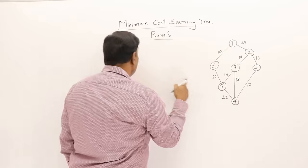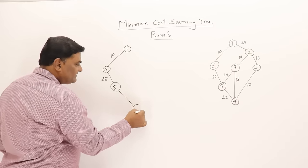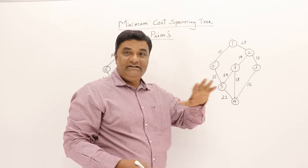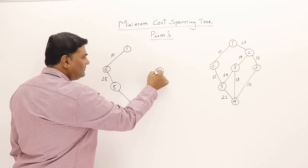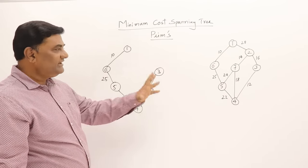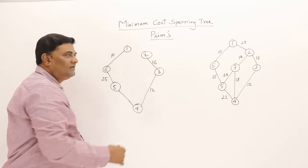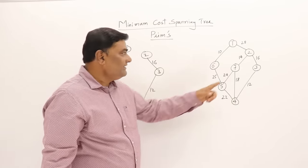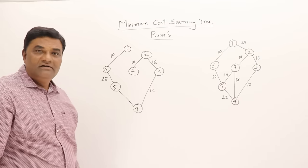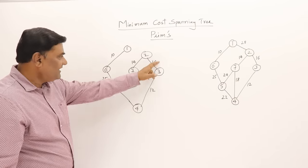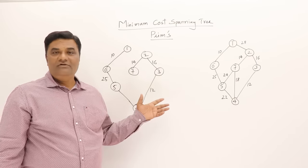From the connected vertices 1 and 6, the connected edges are 25 and 28 — so 25 is minimum, select it. Then checking from vertices 1, 6, and 5: the connected edges include 28, 22, and 24 — the smallest is 22, so vertex 4 is selected. Next, from 1, 6, 5, and 4: checking 24, 18, and 12 — 12 is smallest, so take 12. Then 16 is next smallest, so take 16. Finally, edge to vertex 7 with cost 7 is selected. With 7 vertices, 6 edges are selected and we have our minimum cost spanning tree.